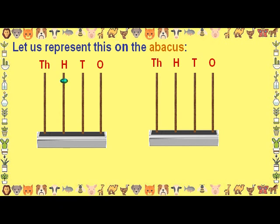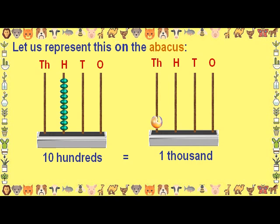When we put 10 beads of 100s value each in the rod showing the 100s place value, the number becomes 1000, which is equal to 1 bead of the 1000s value.